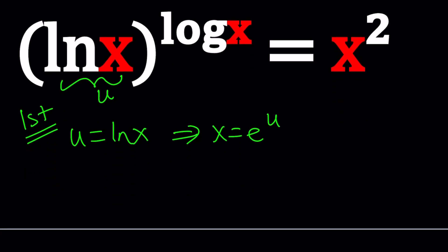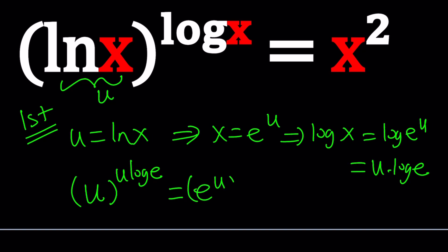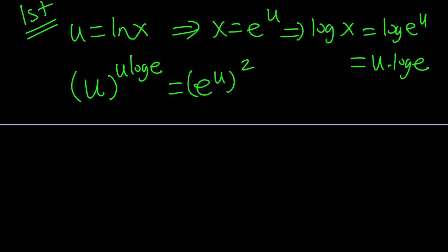And then you can pretty much replace x with e to the u everywhere. Replace ln x with u. What about log x? Let's just log both sides here. That gives us log e to the u, which you can write as u times log e. Just remember that log e is a constant. Okay, it is a constant. So now we can go ahead and write this as u to the power u log e. And then that is going to equal x squared, which is e to the power u squared.